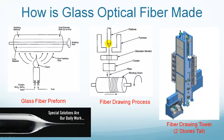Then the preform is hanged at the top of the fiber drawing tower. The tower is a couple stories tall as shown in the right picture. The preform is heated by a furnace which softens the glass. The softened glass drips and is pulled downward by gravity.